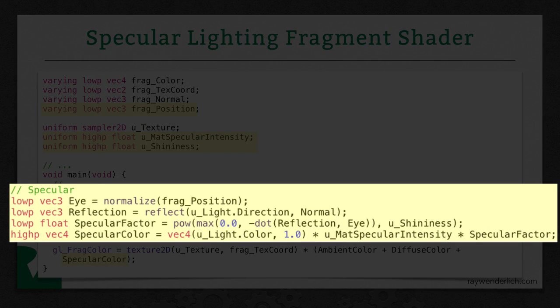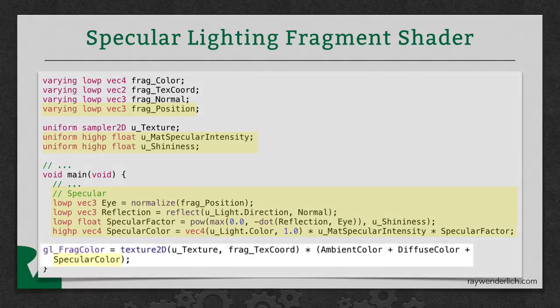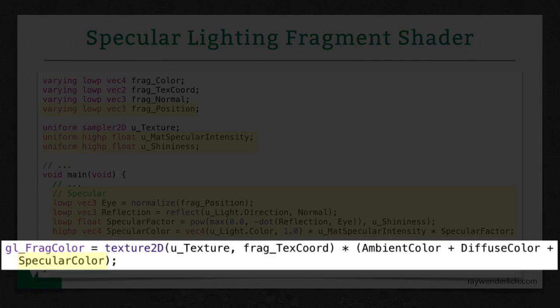Next down here in the specular section, we normalize the position. And we use the built-in function called reflect that comes with GLSL to reflect the light about the normal. Then we use the line of code you saw from the slides, where we take the negative dot reflection of the light, maximum of that and zero, and raise it to the power of the shininess to get that specular factor. And the specular color is just the light's color times the specular intensity times the specular factor. Finally, we add that onto the fragment color for our final shading.